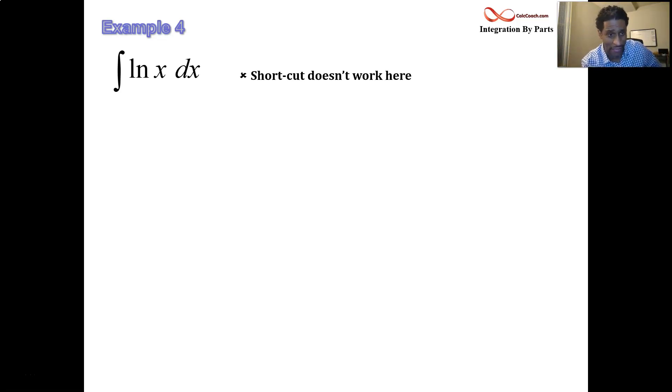So what's left for dv? Well, you know, anytime you have one function, this actually can be thought of as a product. You know, it could be 1 times the natural log of x. That's your product. And so that's what you're going to let dv be equal to 1 times dx.